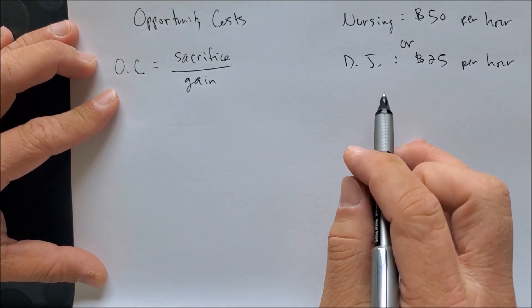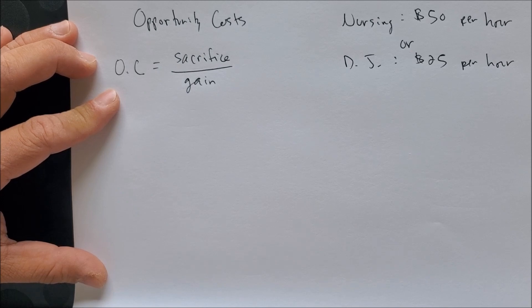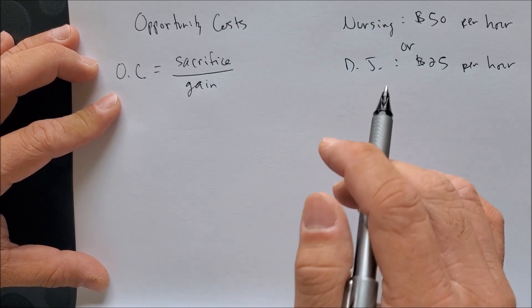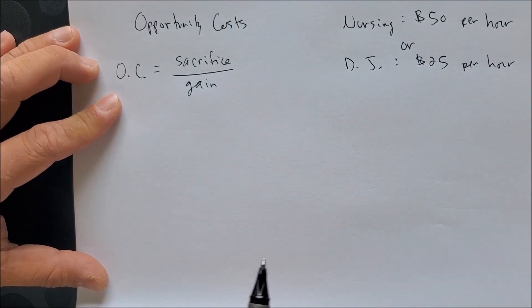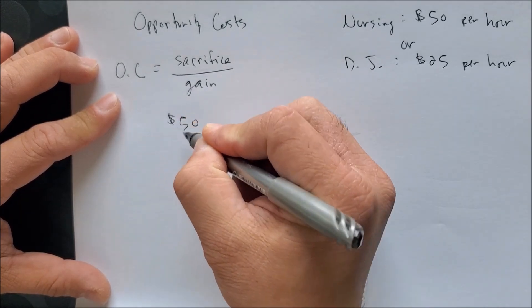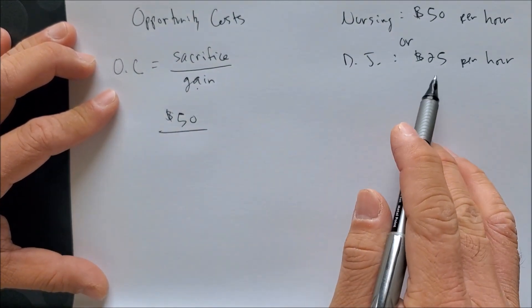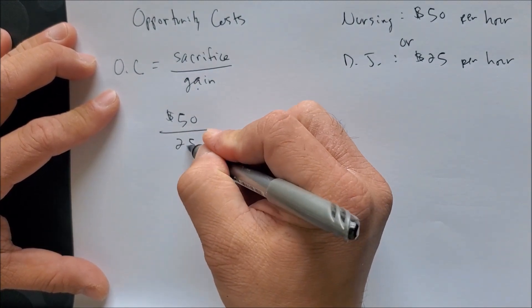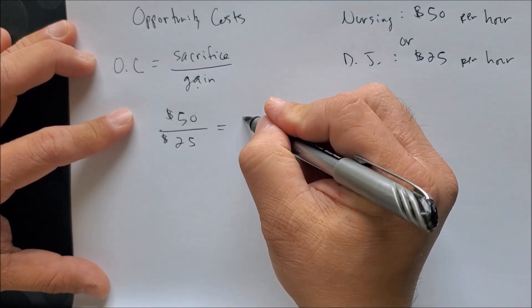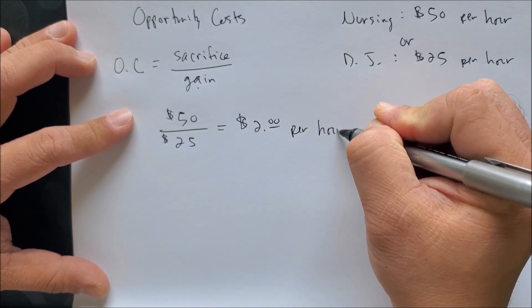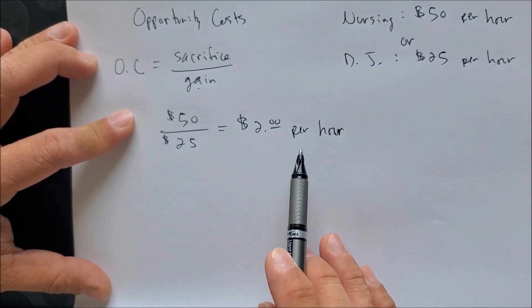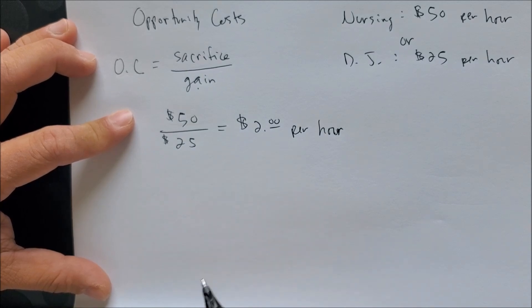Let's say you choose to become a DJ because it takes a lot less in school and is much more accessible. So you're looking at becoming a DJ and giving up on becoming a nurse. What you will sacrifice is becoming a nurse, potentially making $50 per hour. What you are gaining is being a DJ on weekends, at night, earning $25 per hour. When we divide 50 over 25, we get $2 per hour. So if you choose to become a DJ, for every hour you work, you are giving up $2 had you become a nurse.